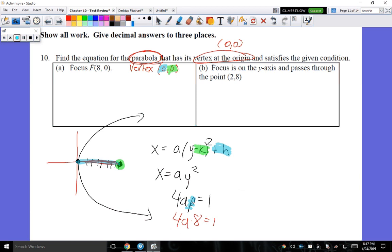Because it's looking to the right, we're going to make it a positive 8. So we have 4A times 8 is equal to 1. Otherwise, 32A is equal to 1. So that A is 1/32. So if I write this out, I'm going to get X is equal to (1/32) times Y squared. That's my answer for part A.